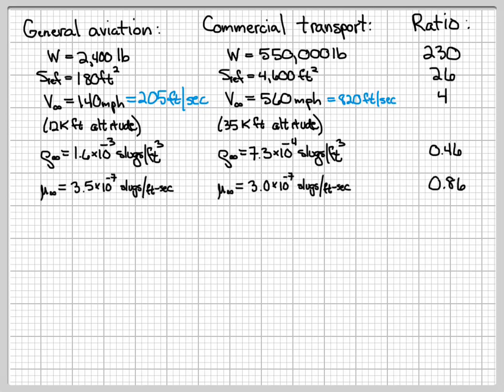We've also been given more data. We've been given the dynamic viscosity for the two aircraft, and you can see here the general aviation aircraft is slightly higher viscosity, 3.5 times 10 to the minus 7 slugs per foot second, whereas the commercial transport is at 3.0 times 10 to the minus 7. So that's a ratio of 0.86 between the commercial to the general aviation, a little bit less for the commercial transport.